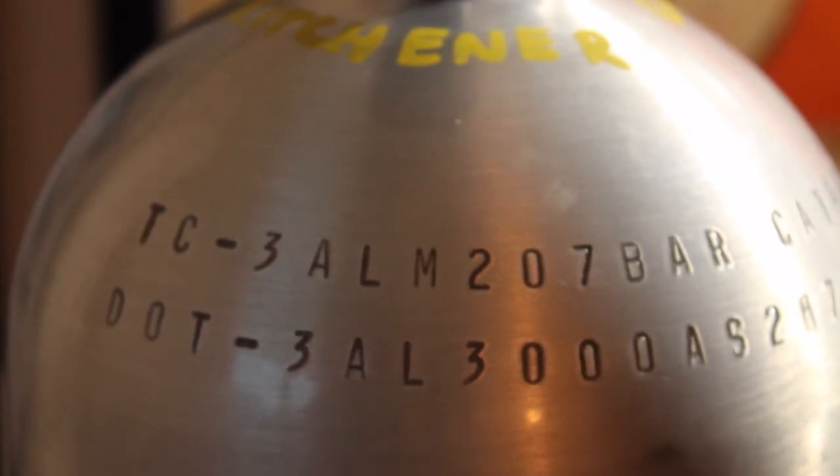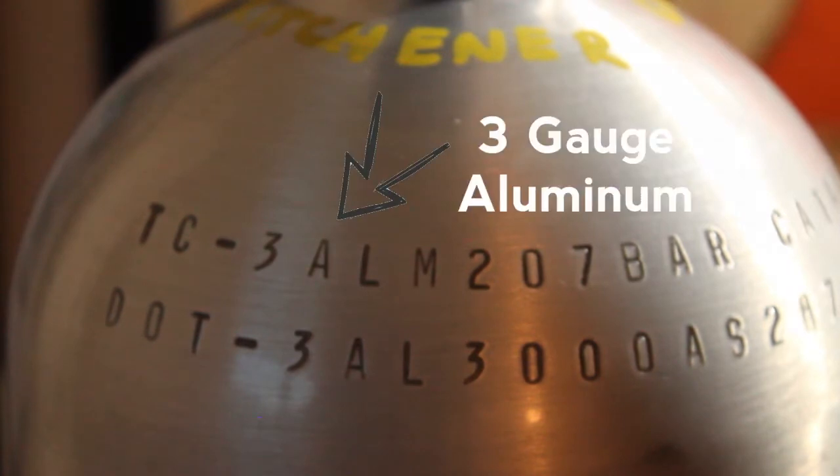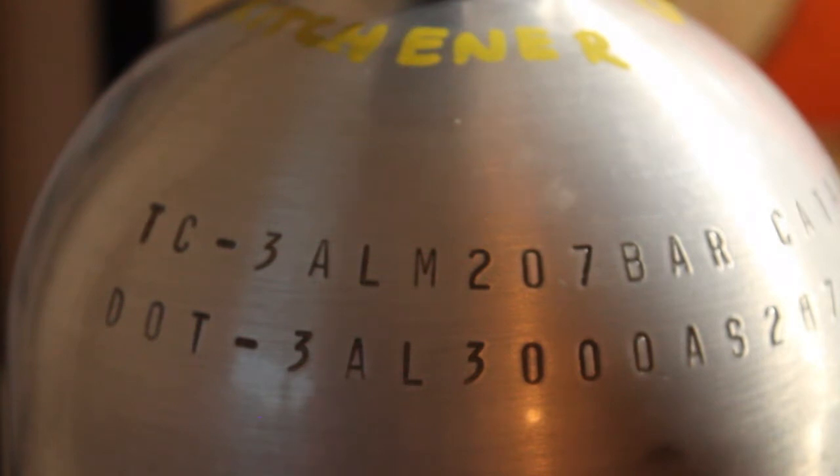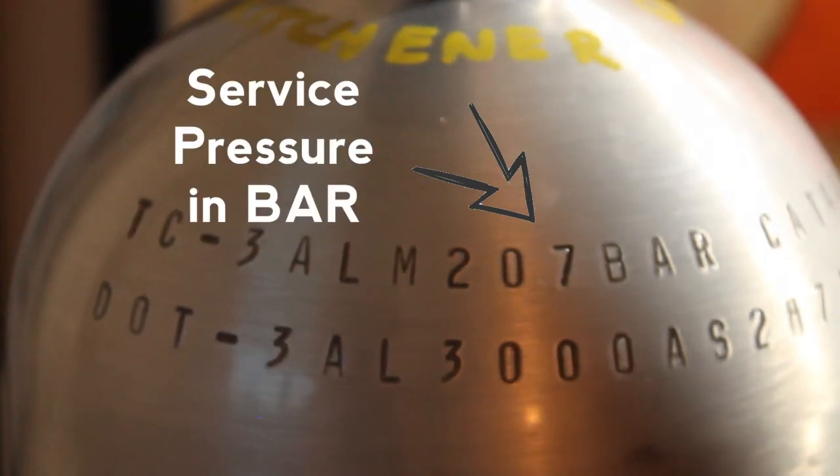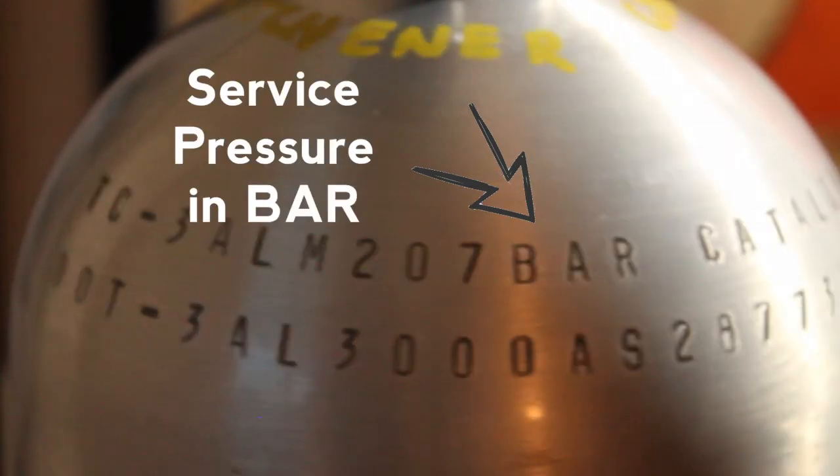Then we have a dash to separate the next bit of information. We have 3ALM or three aluminum and this is going to tell us what kind of tank this is. This particular tank is a three gauge aluminum tank. So now we know what our tank is made of. The next bit of information is 207 bar and that is for all of you who like to deal with the pressure in bar. This tells us the working pressure of this tank is 207 bar.